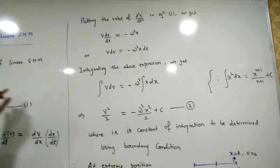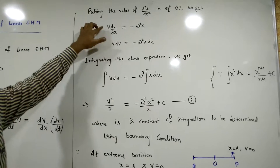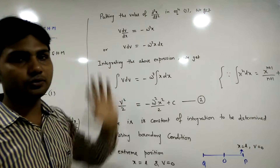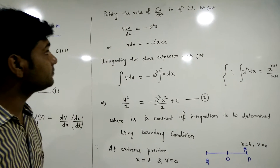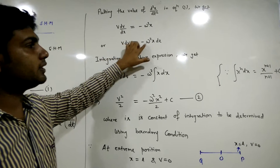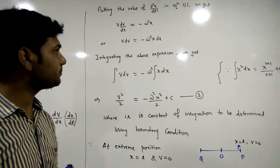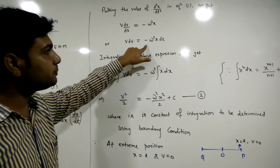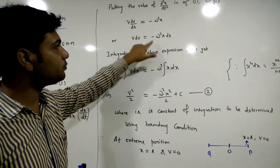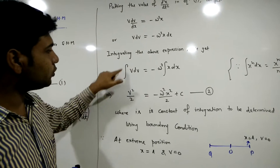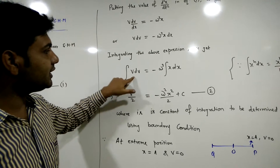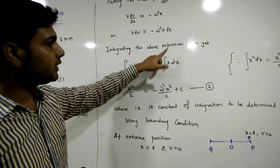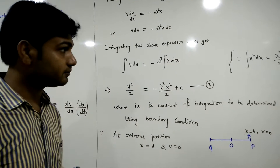Putting the value of d²x/dt² into the equation, we get v · dv/dx = -ω²x. Integrating this equation with respect to x from both sides, we get ∫v dv = -ω² ∫x dx.